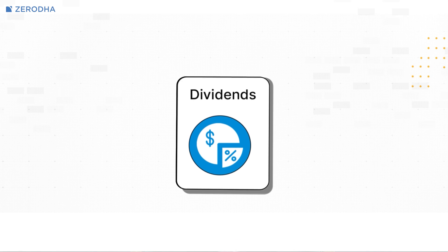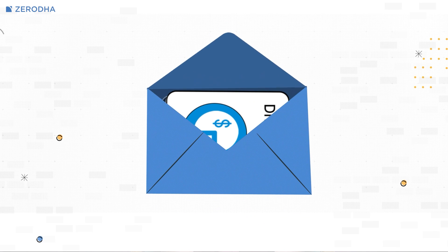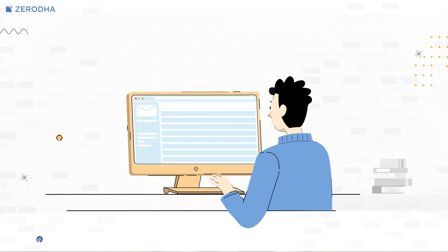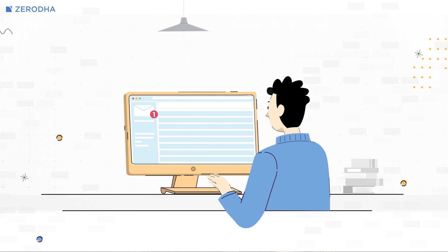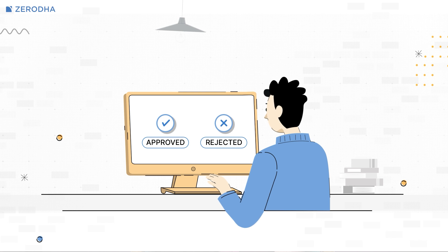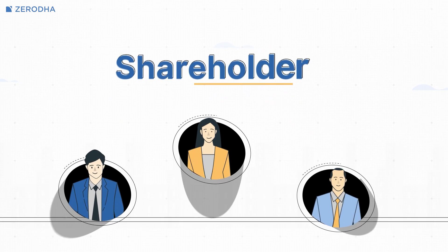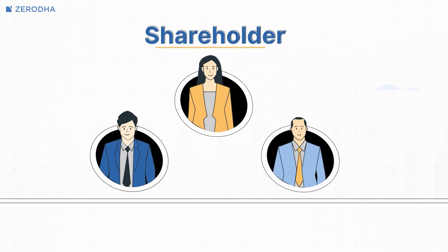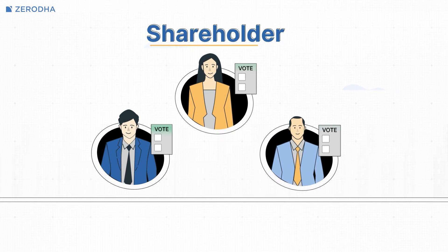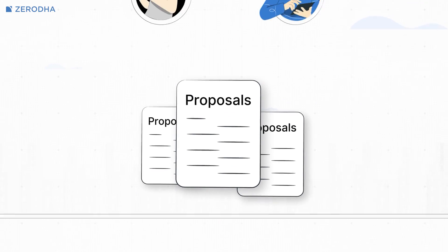Before implementing any of these proposals or resolutions, a company has to present them before its shareholders and get their votes on whether a proposal has to be approved or rejected. As a shareholder of the company, you are entitled to vote on all these important proposals.